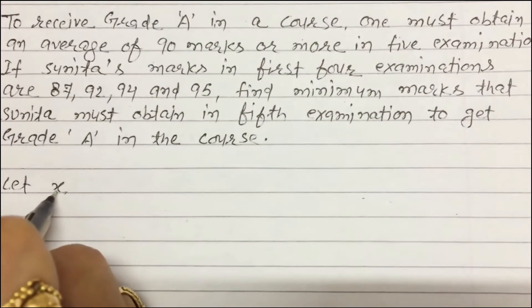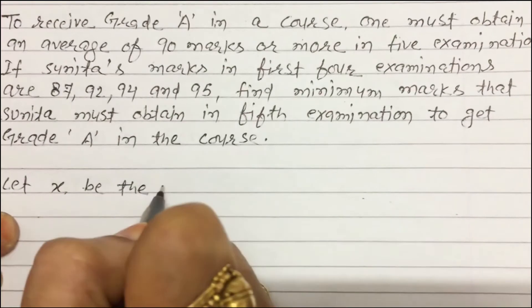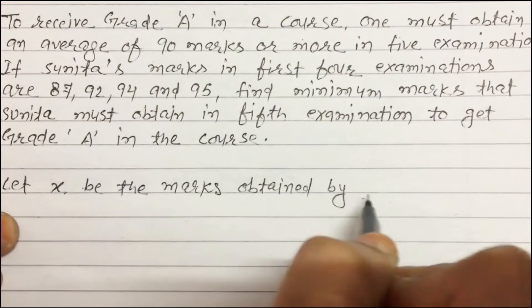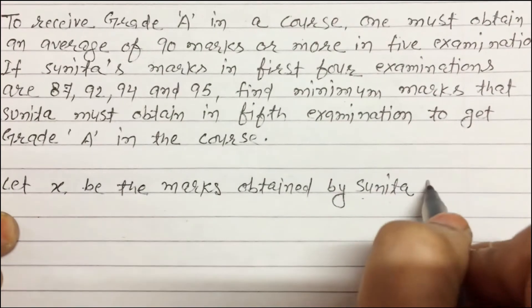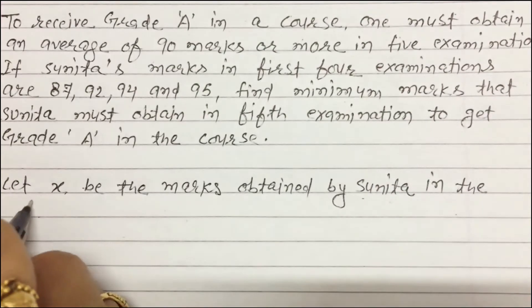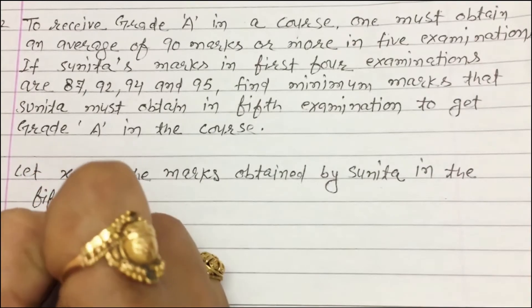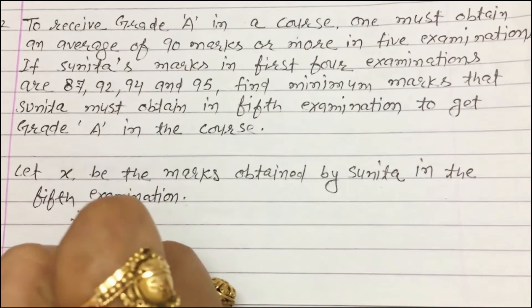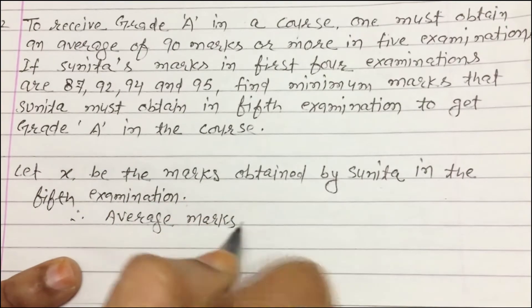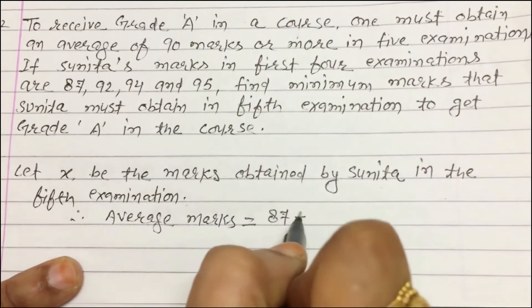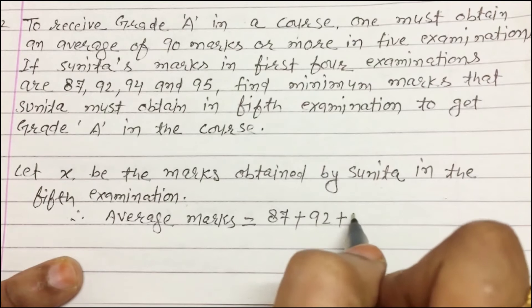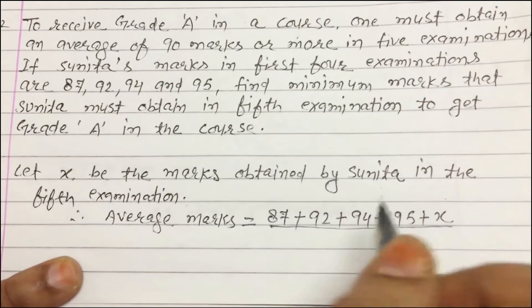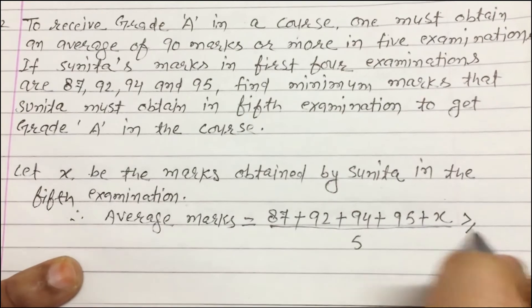Let x be the marks obtained by Sunita in the 5th examination. Average marks: (87 + 92 + 94 + 95 + x) / 5 ≥ 90.